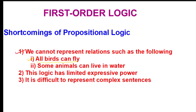In first order logic we can express 'all birds can fly' in one sentence, but we cannot do this in propositional logic. The second shortcoming is 'some animals can live in water' — this sentence cannot be expressed in a single sentence in propositional logic. The third shortcoming is that propositional logic has limited expressive power, and it is difficult to represent complex sentences. Therefore we use first order logic.